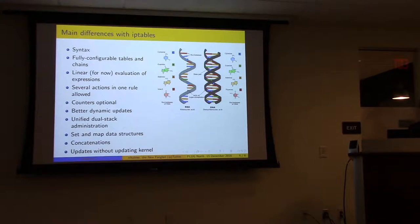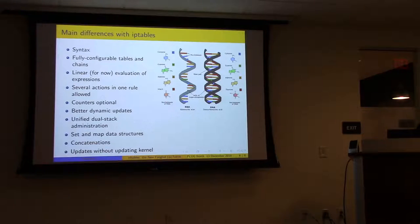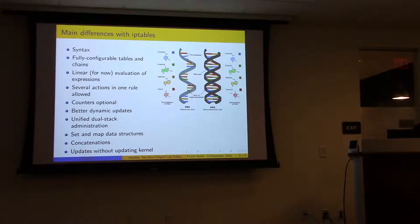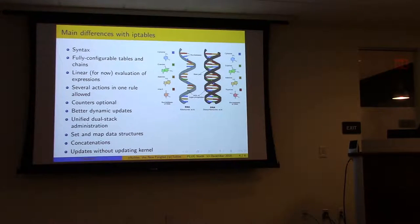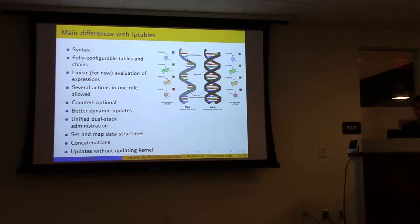Set and map data structures: fail2ban has an NFTables implementation. It can create a set of IPs that fail2ban has flagged as worthy of banning, put them in that set data structure, and the rest of the rule set can reference that set. It can be really any type of data — IP addresses or even expressions in there — as long as you use them properly.